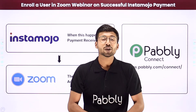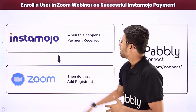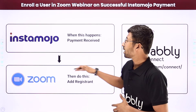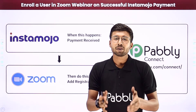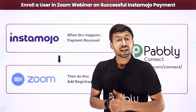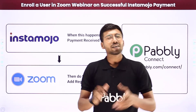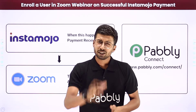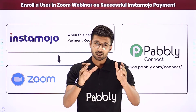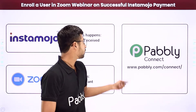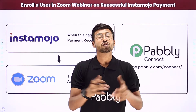So in this video I came up with an awesome automation by which whenever we receive a new payment on our Instamojo account, automatically the customer who made the payment will be added as a new registrant in our Zoom webinar. To make this happen we will be using Pabbly Connect, which is an automation and integration software.